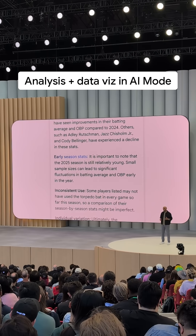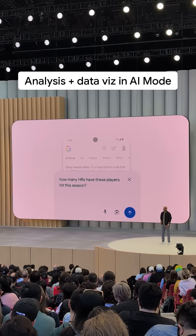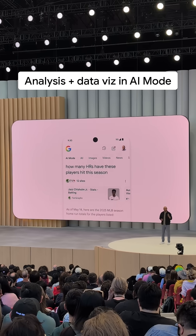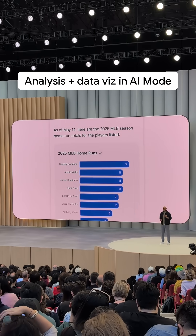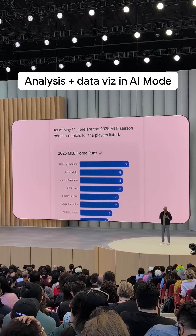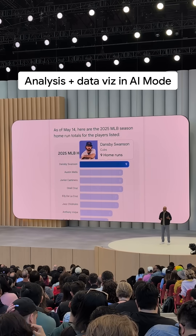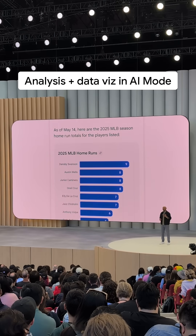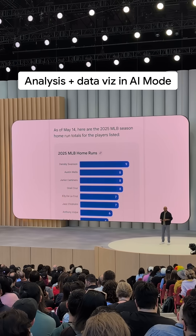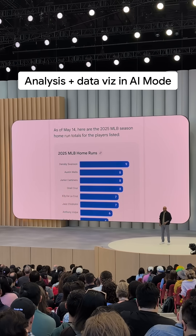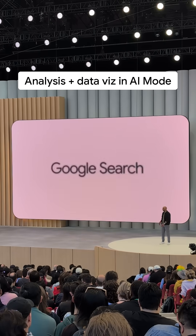I can follow up and ask, how many home runs have these players hit this season? And just like that, I get this graph. This goes back to what Liz mentioned about AI mode dynamically generating the right UI for each response. Search figured out that the best way to present this information is a graph, and it created it. It's like having my very own sports analyst right in search.